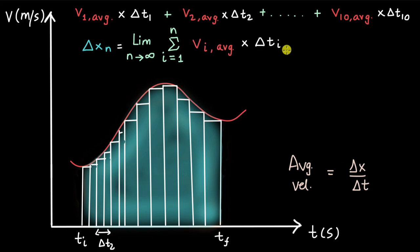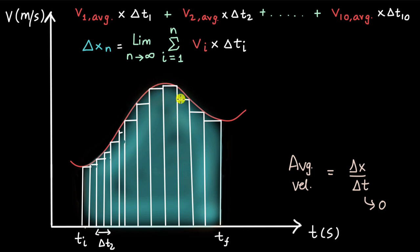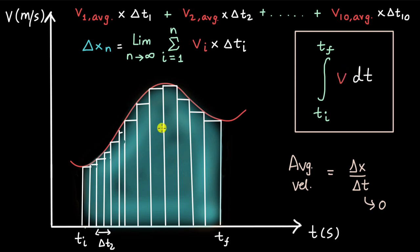Since delta T has approached zero, we can move from average velocity toward instantaneous velocity — because instantaneous velocity is the velocity at one particular time instant, which is exactly when delta T approaches zero. So we remove the 'average' from the expression, leaving instantaneous velocity times delta T_I. This notion of getting better and better approximations as N approaches infinity is the core basic idea of integral calculus.